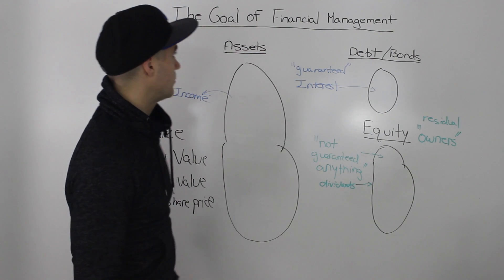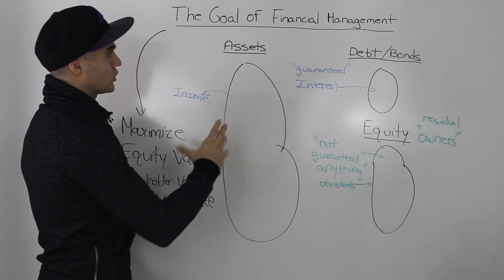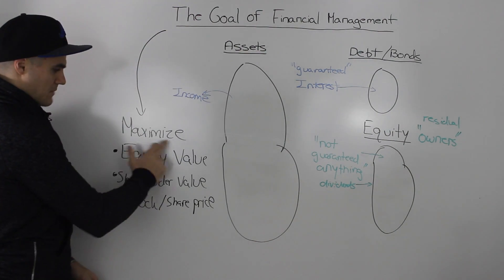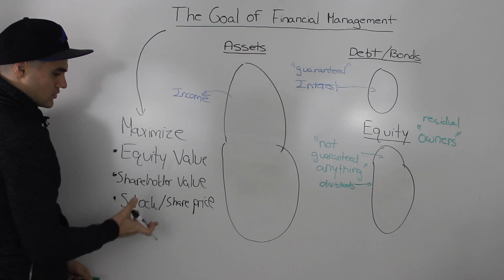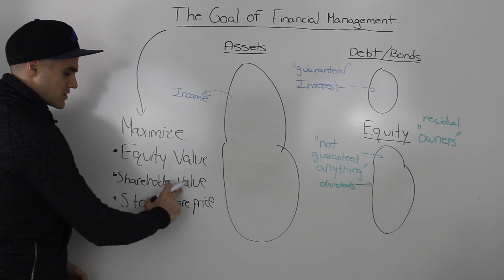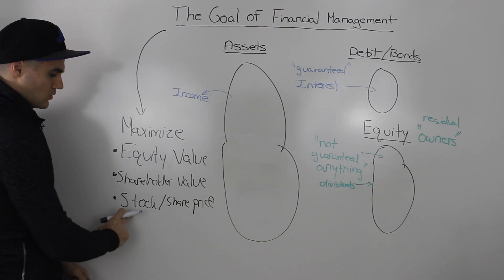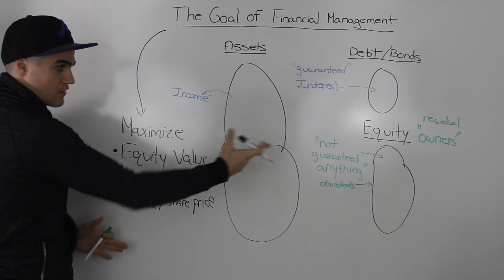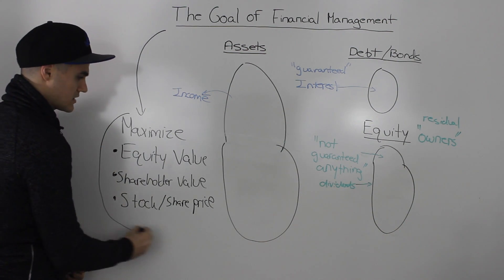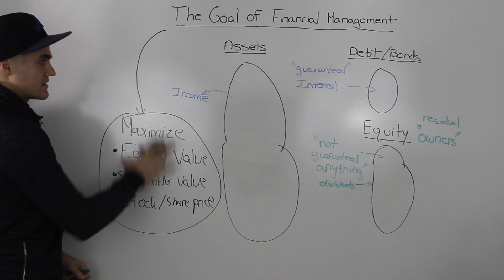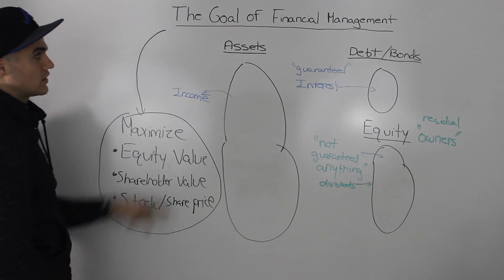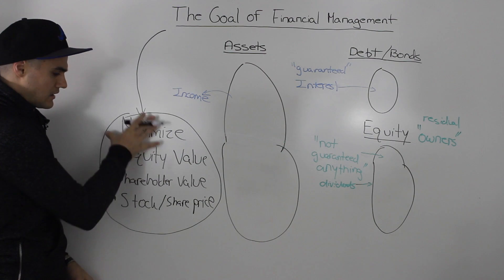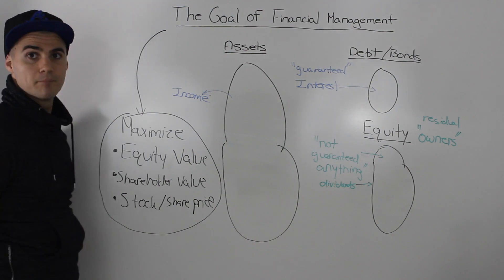In conclusion, there are a couple of different ways you can word the goal of financial management: maximize the equity value, maximize shareholder value, or maximize the stock or share price of the equity. These are all different ways to word the goal of financial management — you may see any of these come up on your midterm.